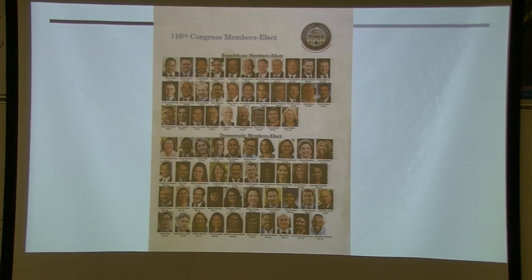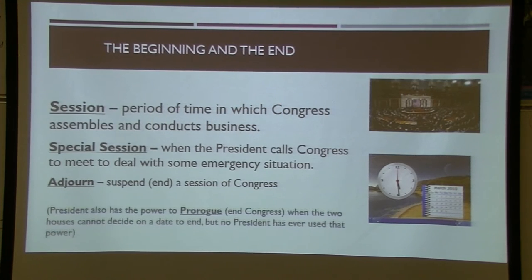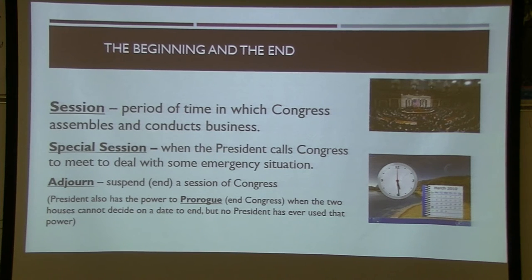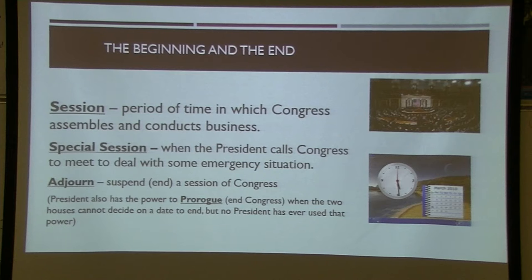Some terms you need to know: a session is the period of time when Congress convenes and conducts business, ending when they adjourn. A pocket veto can occur if Congress adjourns and the president ignores a bill passed in the last 10 days. Today, Congress usually doesn't actually adjourn — they go on recess instead. But if they do adjourn and the president needs them, he has the power to call a special session. There's also the power of prorogation — the president could theoretically force Congress to leave — though it has never been done.